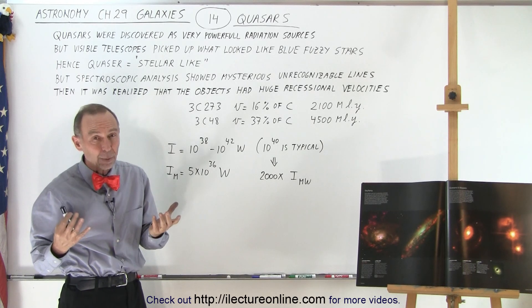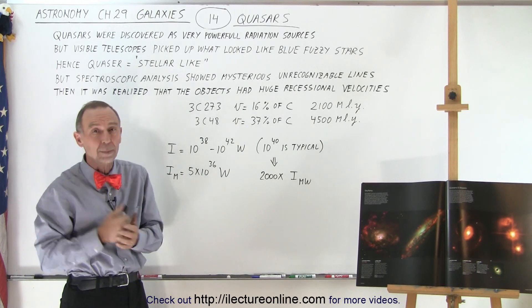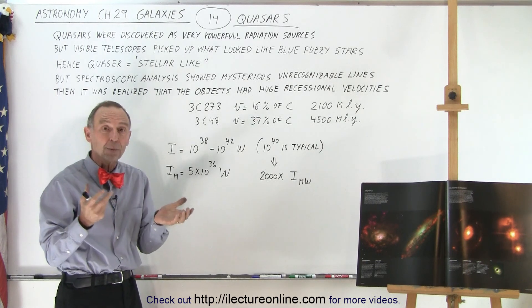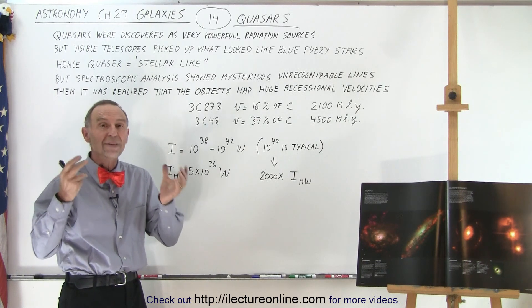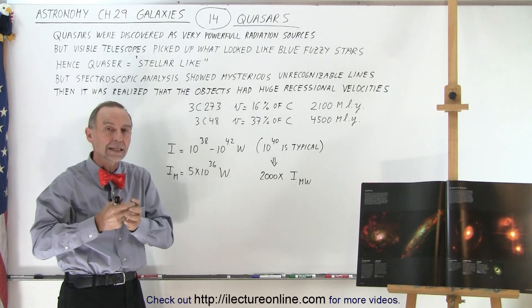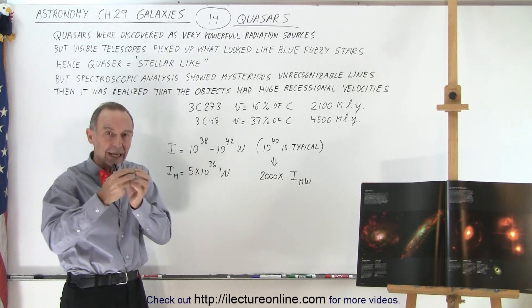When we started looking at these with better telescopes, like the Hubble Space Telescope, we began to realize that this is always happening when galaxies are colliding. Usually when two galaxies are colliding, there's so much material being offered up to the black holes at the center of these galaxies.